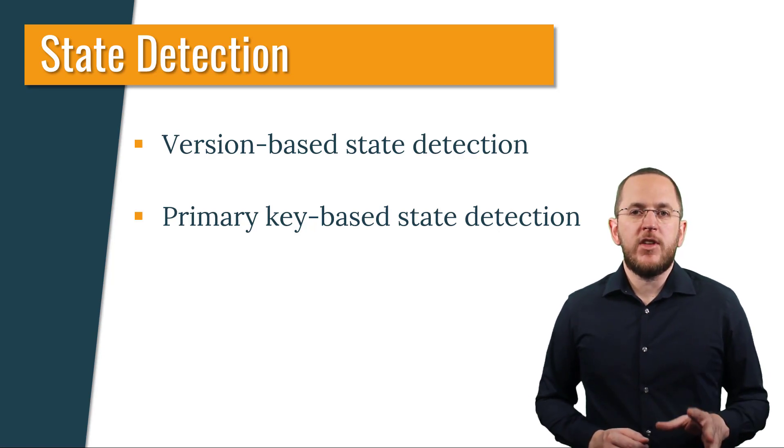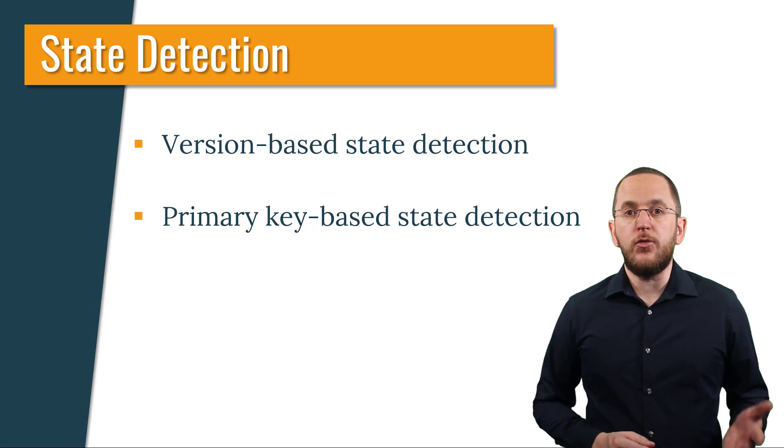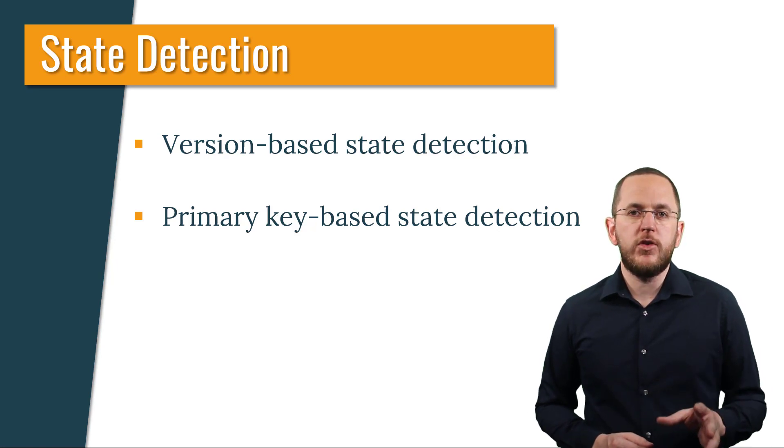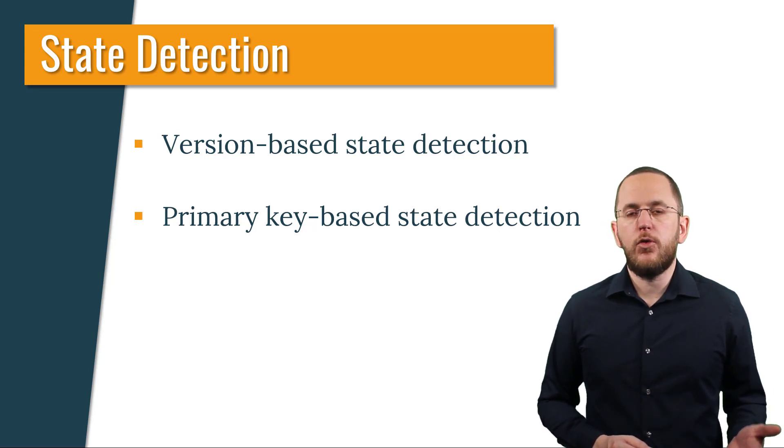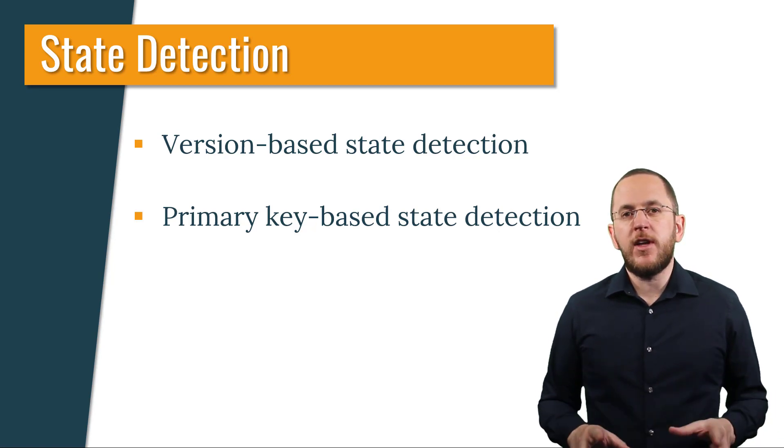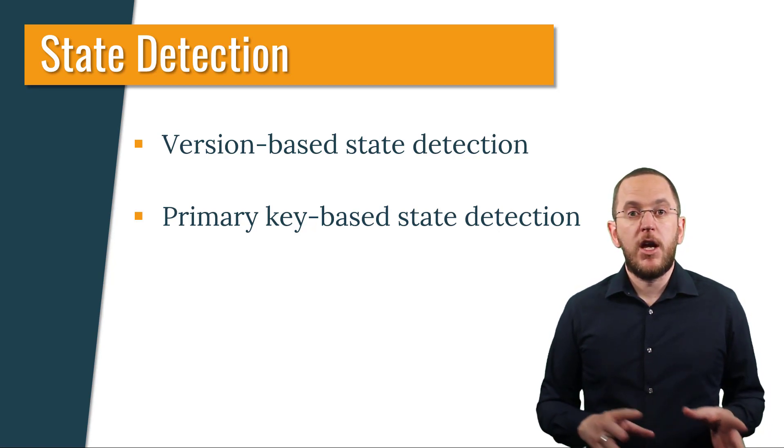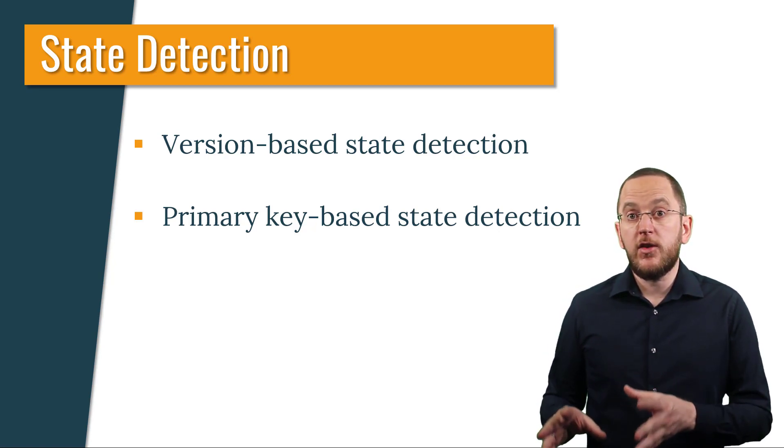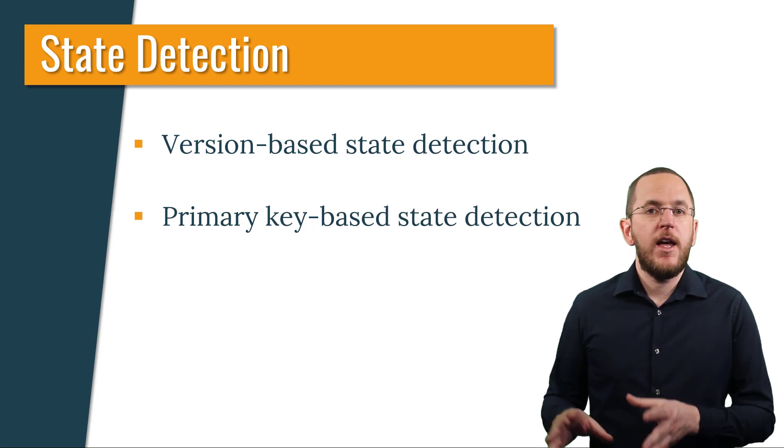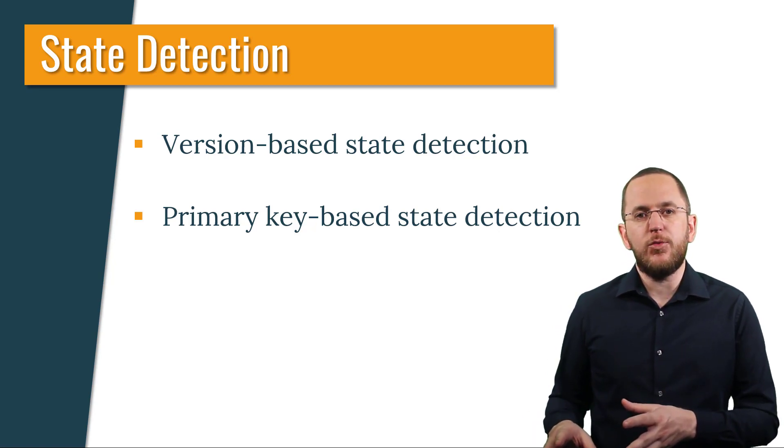The primary key-based state detection is very similar to the version-based approach. The only difference is that Spring Data JPA checks if the primary key attribute is null instead of checking the version attribute. If it's null, Spring treats the entity as a new object and persists it. Otherwise, it expects the entity to be an existing one and updates the corresponding database record.